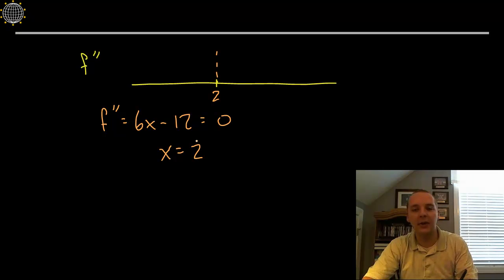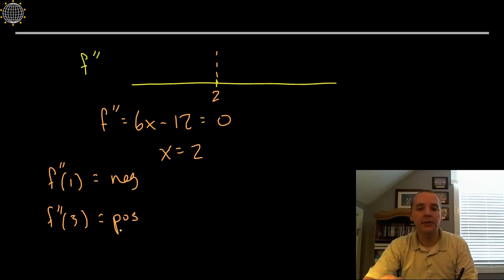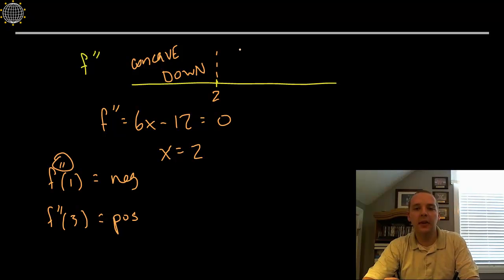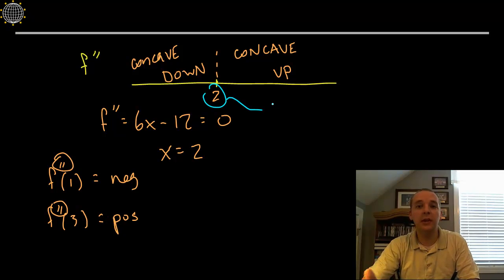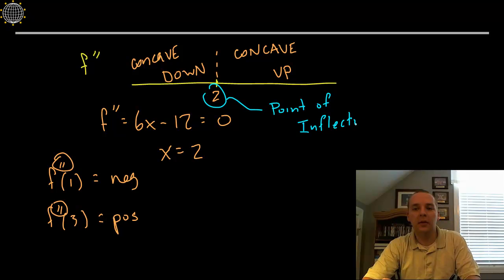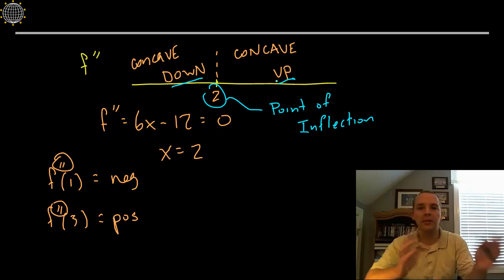Often times this will be a point of inflection, but I can't definitively say that until I try it. Let me pick something before 2, how about 1, and after 2, how about 3. If you plug 1 in the second derivative, you would get a negative quantity. You plug in 3, you get a positive. This does not mean increasing and decreasing. This means concave down is a negative second derivative, and concave up is a positive second derivative.